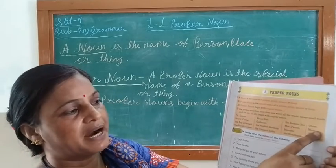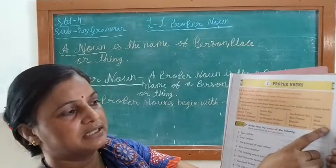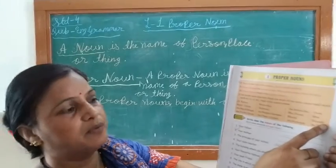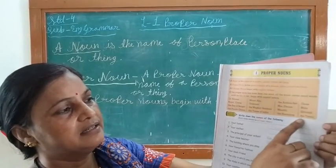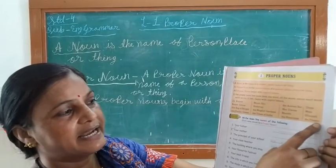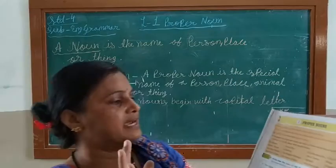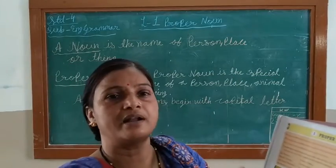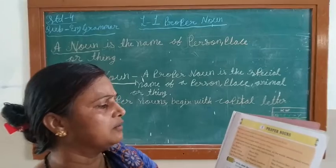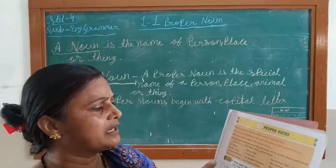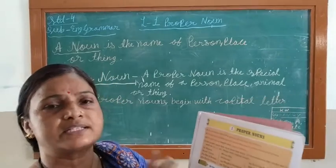Festival, Mars the planet, Gitanjali the book, the Titanic — all of these are proper nouns. Always remember: any naming word is called a noun, and the first letter of a proper noun is always written in capitals.